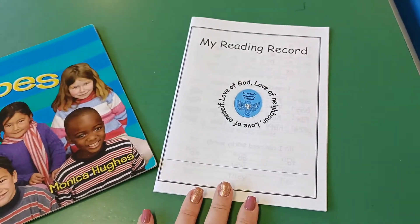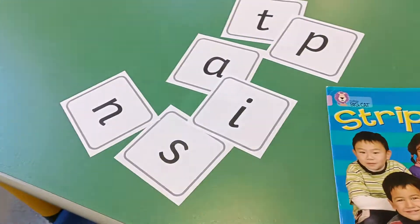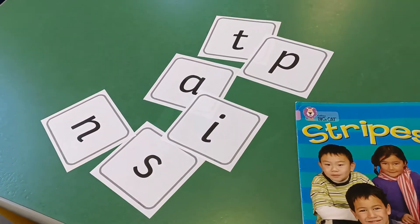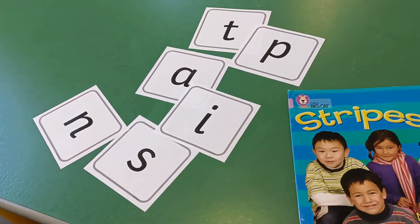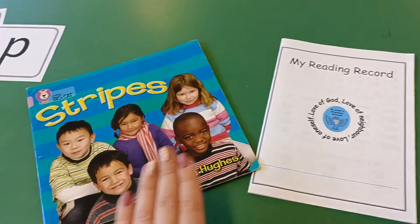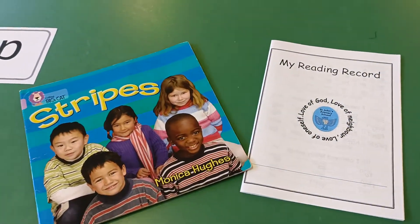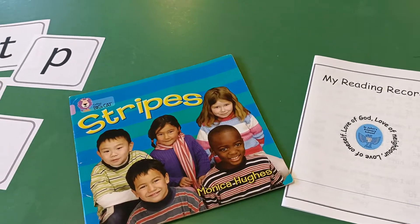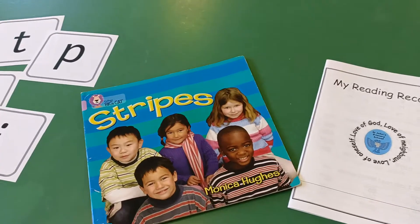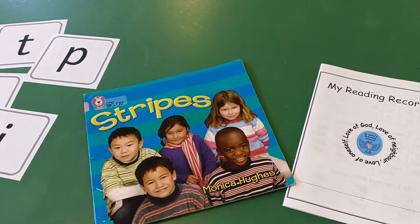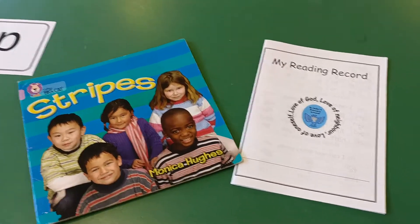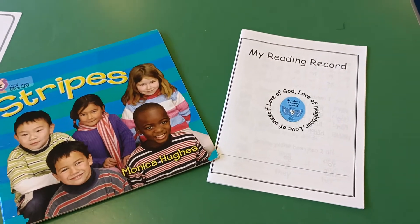And a reading record with some information in and some sounds as well as some pictures in your bag too. Now the book and the reading record need to stay inside the little plastic wallet that it came in and that needs to stay inside your school book bag. That needs to come back to school every single day.